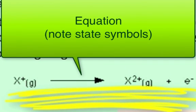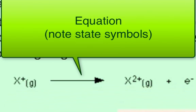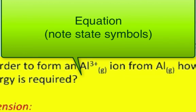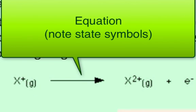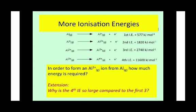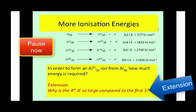There's an equation to show what we're talking about there. The third ionisation energy would be the energy required to remove one electron from the two-plus ion, and so on. Pause this and work out how much energy would be required to form an Al³⁺ ion. Pause now.